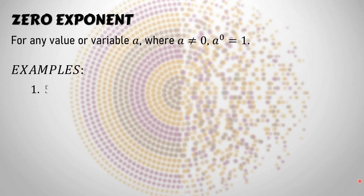Let's have the examples. Number one: five raised to zero — that is equal to one. Similarly, 100 raised to zero is also equal to one.